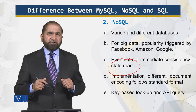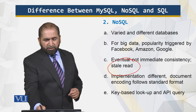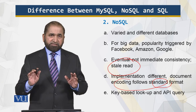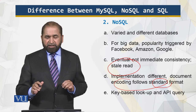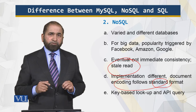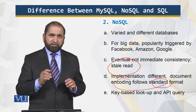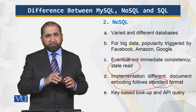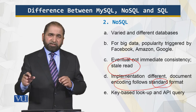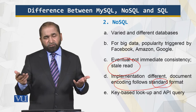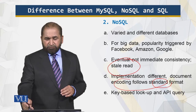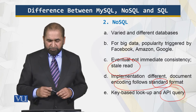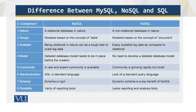NoSQL implementation is different in terms of document coding, but it follows a standard format and supports key-based lookup — you have a key and based on that key you can retrieve what you are looking for. The advantage is quick search, and there are APIs available to query the database.